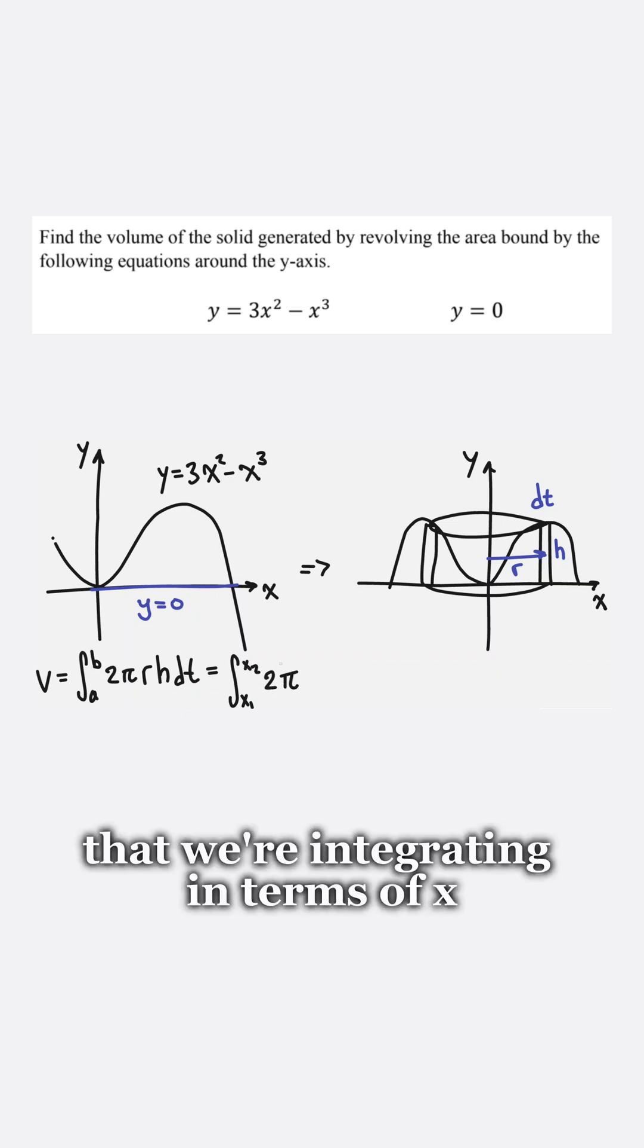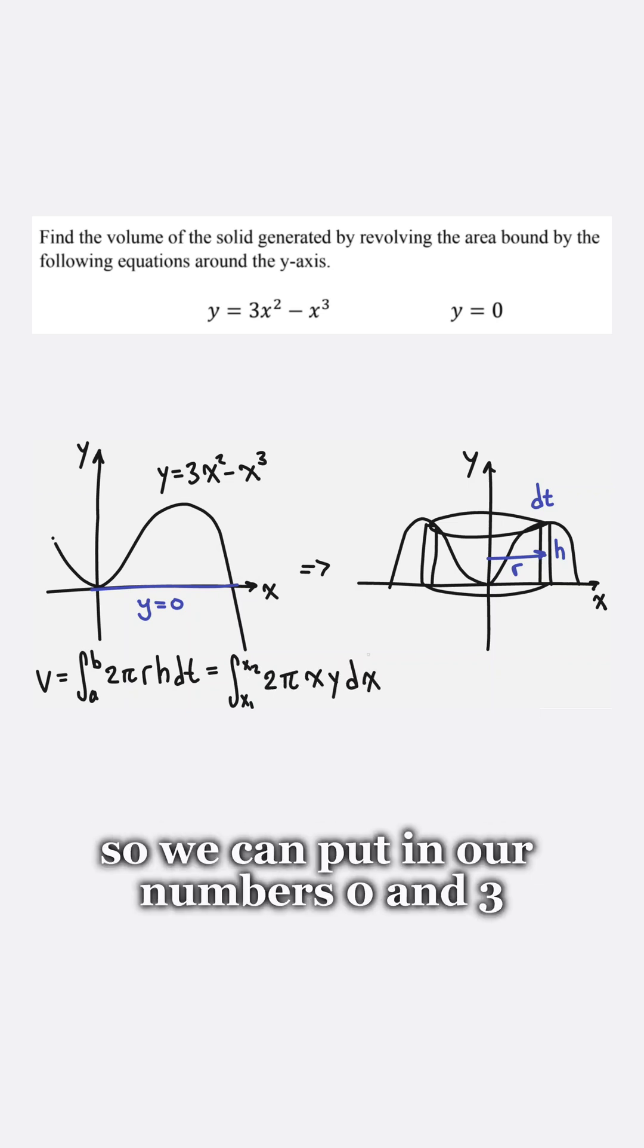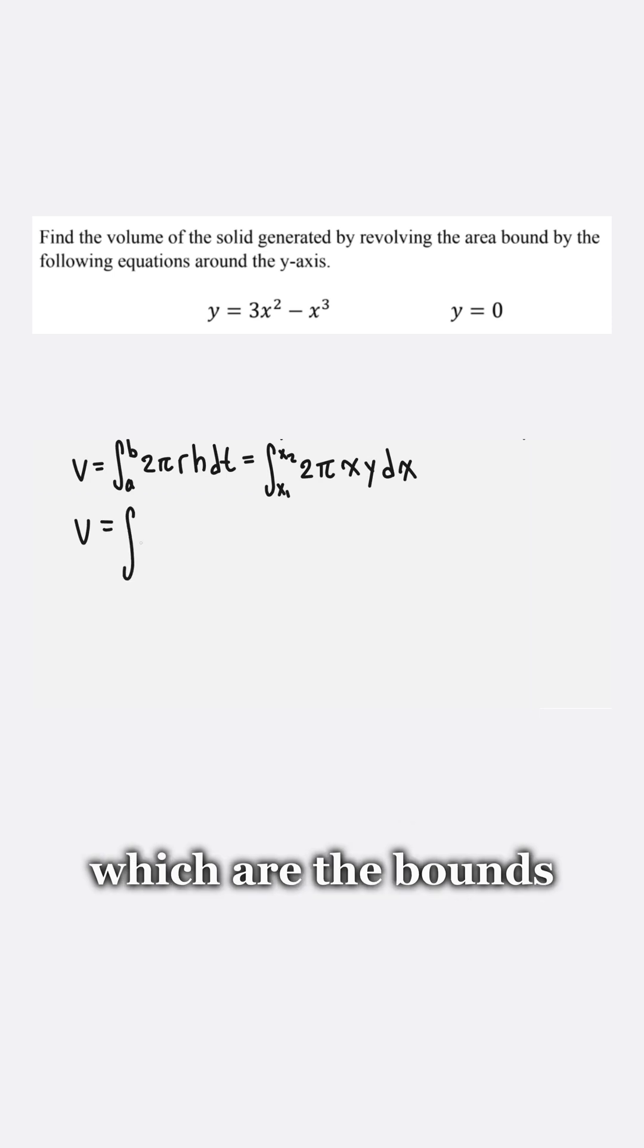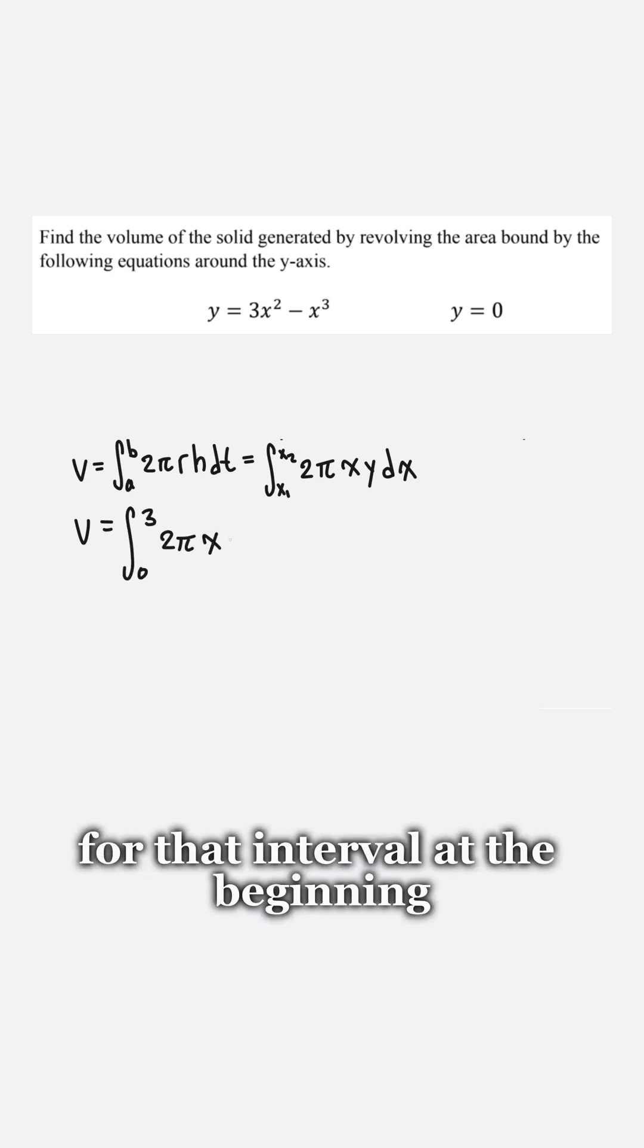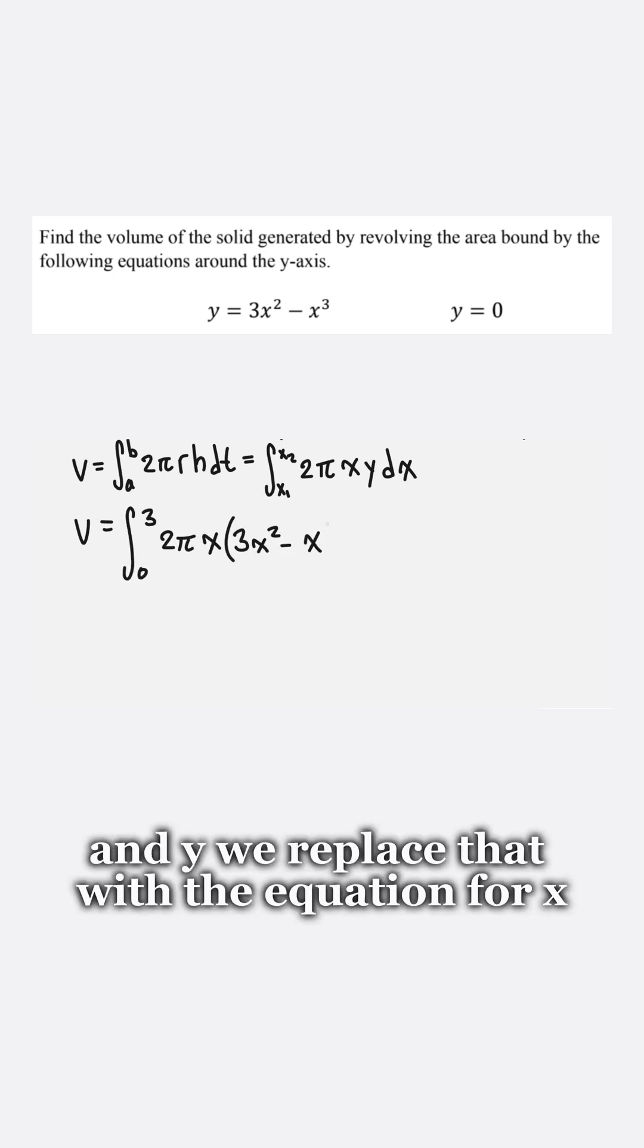So that tells us that we're integrating in terms of x, so we can put in our numbers 0 and 3, which are the bounds for that interval at the beginning. Then x we just leave that alone, and y we replace that with the equation for x.